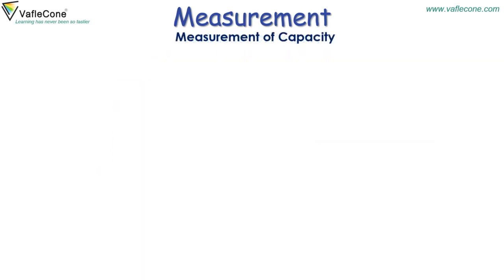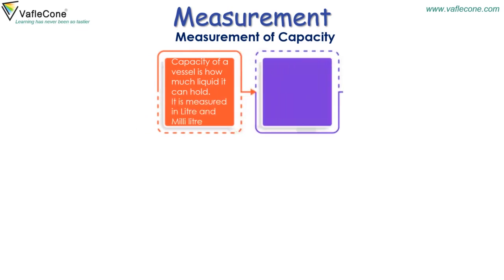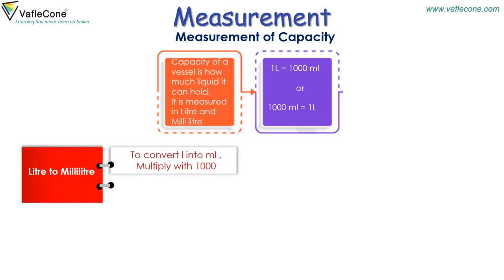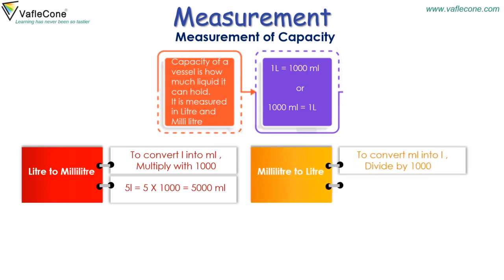Measurement of capacity. Capacity of a vessel is how much liquid it can hold. It is measured in liter and milliliter. 1 liter is equal to 1000 milliliters, or 1000 milliliters is equal to 1 liter. To convert liter into milliliter, multiply by 1000. For example, 5 liters equals 5000 milliliters. To convert milliliter into liter, divide by 1000. For example, 5 milliliters equals 0.005 liters.